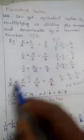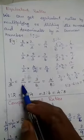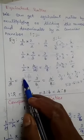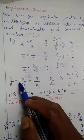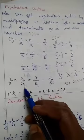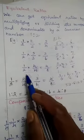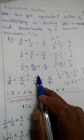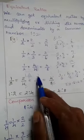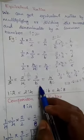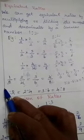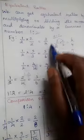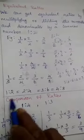You can also check by dividing back. Take 2 by 4 and divide by 2: you get 1 by 2. Divide 3 by 6 by 3: you get 1 by 2. So all these ratios are equal to 1 is to 2.